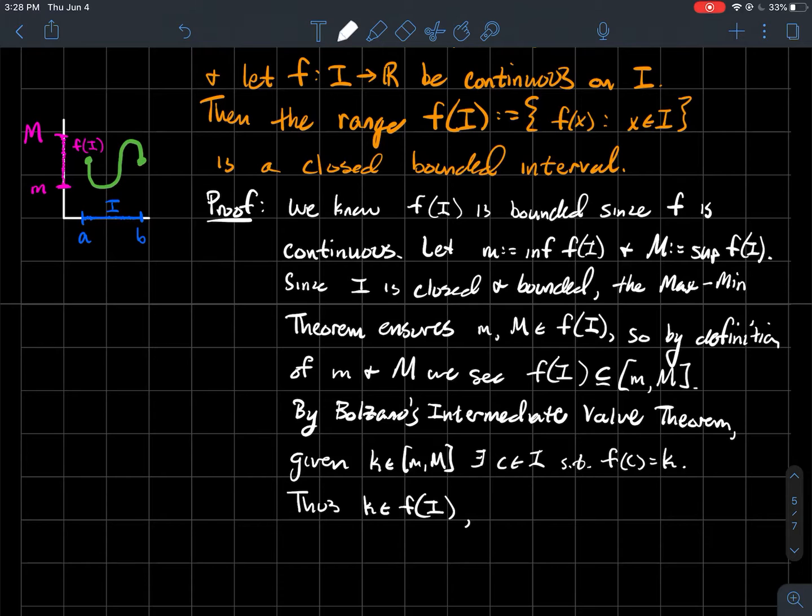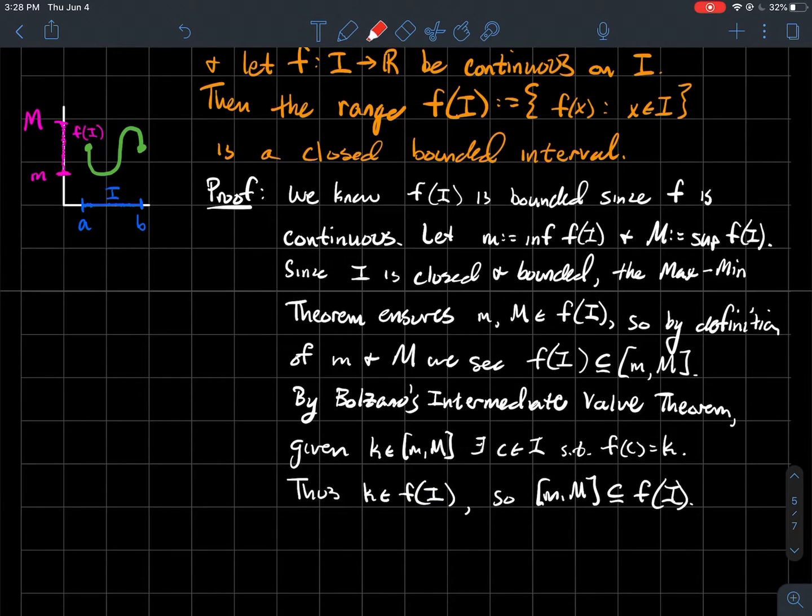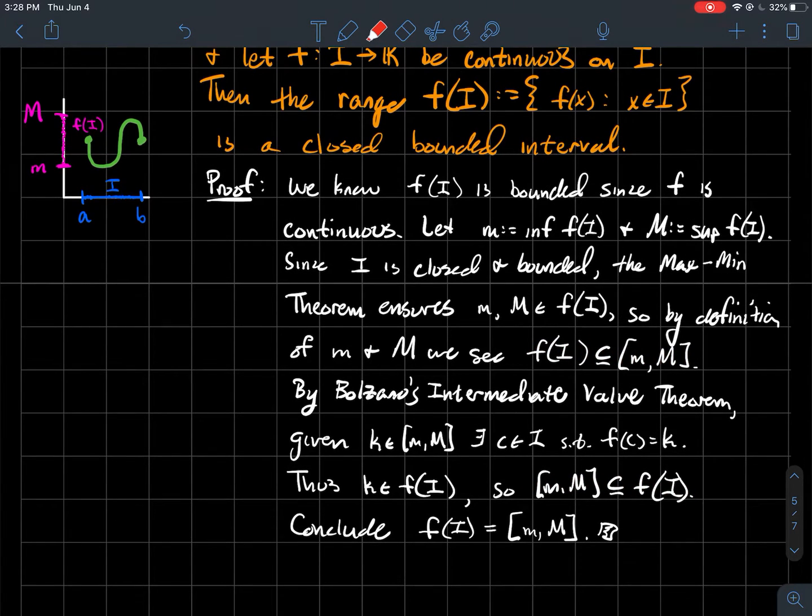In other words, there should exist some point c in my domain whose corresponding output is k. We just took any k in this interval from m to capital M and concluded it lives in f(I). That shows this interval is a subset of f(I). I've got one's a subset of the other this way and the reverse inclusion this way. Therefore, we can conclude these two sets are equal, which is exactly what I wanted to show, that the range is a closed and bounded interval.